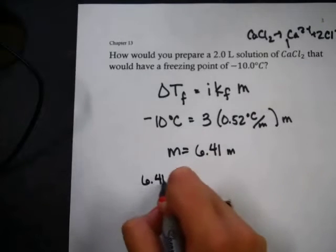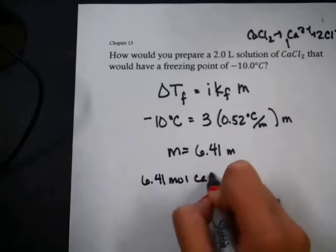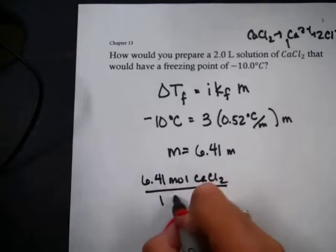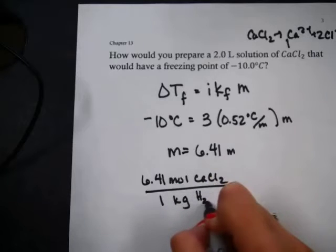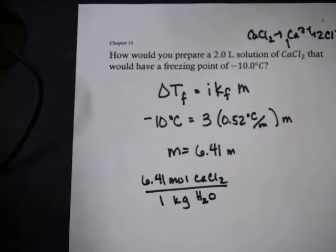When I think about what that means, that's how many moles are in one kilogram of solvent water, so 6.41 moles of calcium chloride per one kilogram of water.